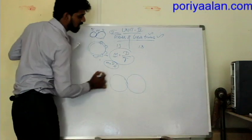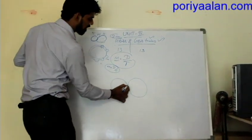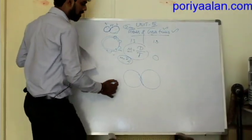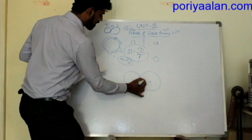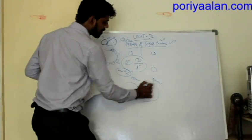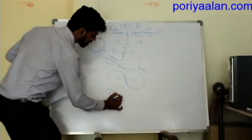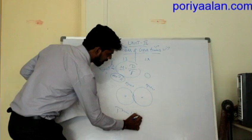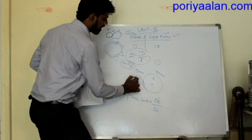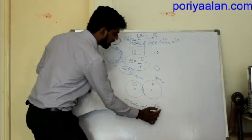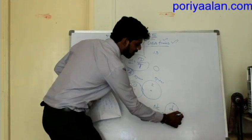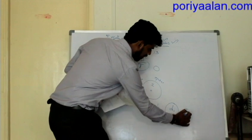A gear train is when 2 or more gears are connected and there is a speed ratio. This is a simple gear train. One gear is the driver and the other is the driven. The train value is equal to n2 divided by n1 — that is, the speed of the second gear divided by the first. This equals d1 by d2, or t1 by t2.